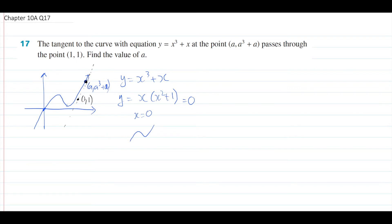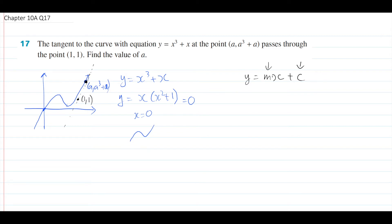Just be careful - the point (1, 1) is not on the curve itself. The point (1, 1) is just a point on the tangent line. The tangent is just a line where the gradient of that tangent line equals the gradient of the curve at the point (a, a cubed plus a) - that's the definition of a tangent. So (1, 1) does not touch the graph, but the point (a, a cubed plus a) is actually on both the graph and the tangent line. Keep that in mind - it's going to be very useful. So we want to find the value of a, and the tangent is crucial to solving this question.